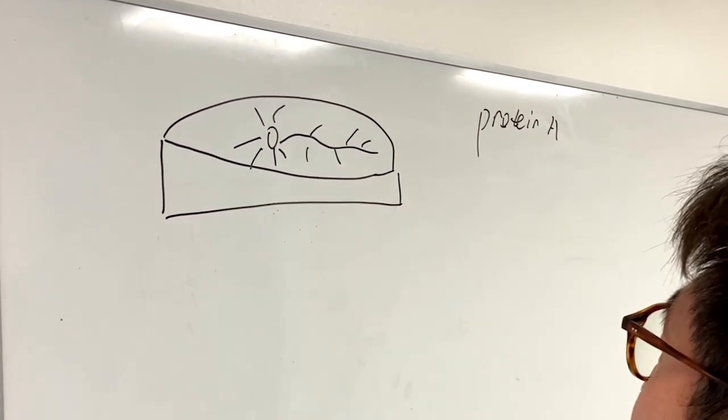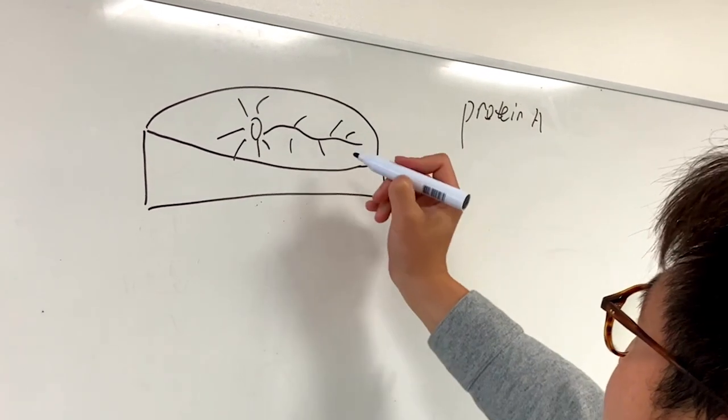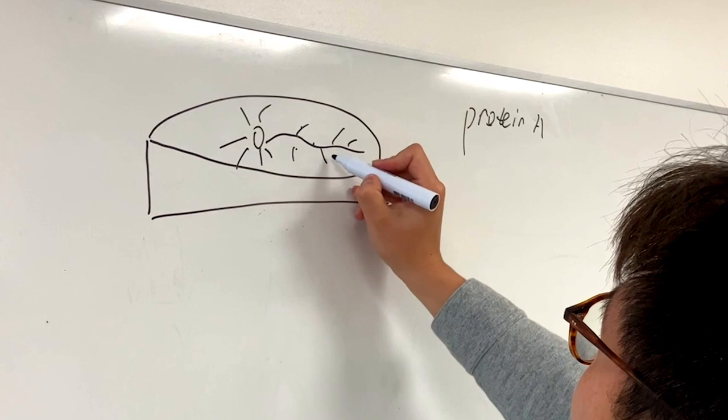Because where the protein is very often implies the function of this protein. For example, this protein A is in these places of the neuron.